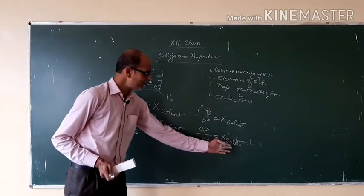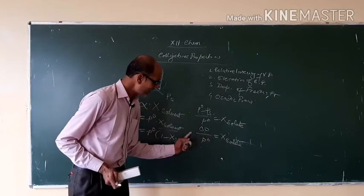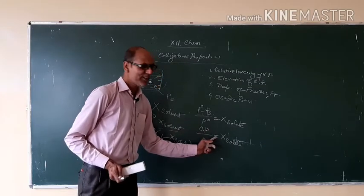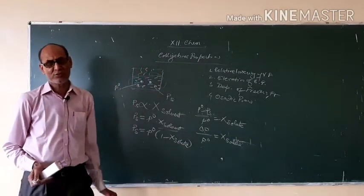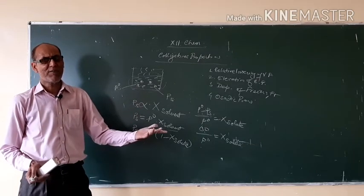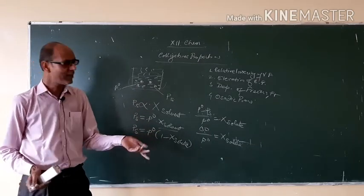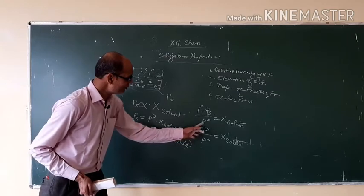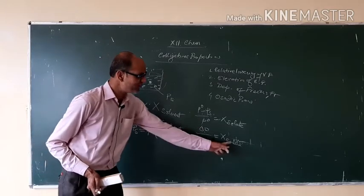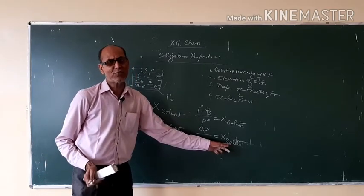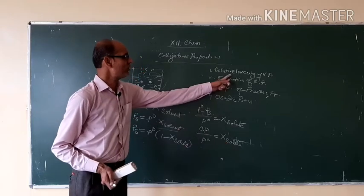What do you understand about this? Relative lowering of vapor pressure equals the mole fraction of solute. Mole fraction depends upon the mass of the solute and solvent. That means relative lowering of vapor pressure depends upon the mass of the solute and solvent and is a colligative property.